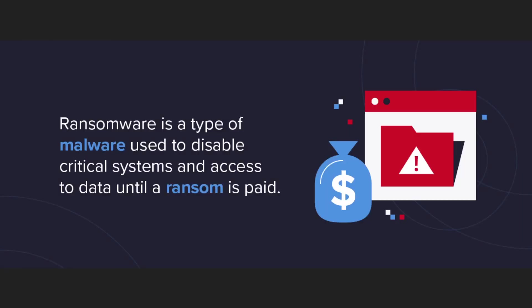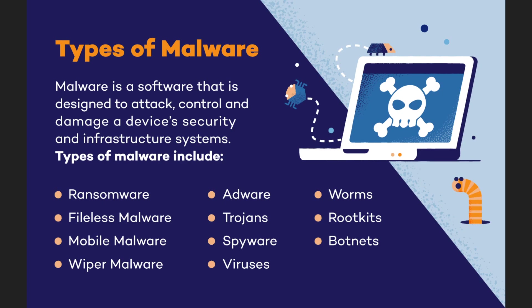So what's rustware, or what's ransomware? Ransomware is a type of malware used to disable critical systems and access to data until a ransom is paid. Malware is software designed to attack, control, or damage a device's security and infrastructure. There are many different types: adware, trojans, spyware, viruses, worms, rootkits, botnets, wiper malware, mobile malware, and fileless malware. In our case, I made ransomware — hence the name rustware.